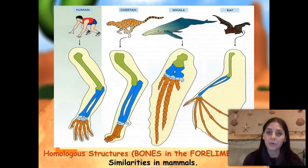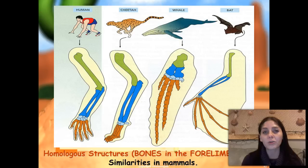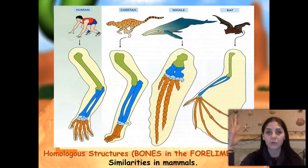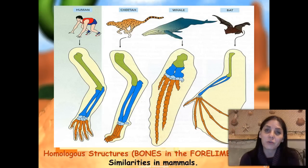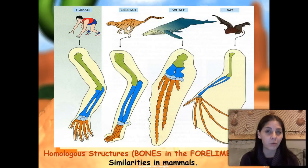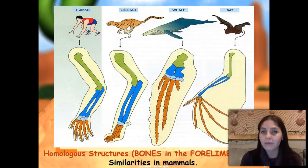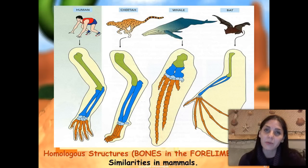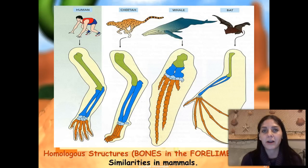Here is an example of homologous structures: the forelimb of a human versus the forelimb of a cheetah, a whale, and a bat. We all have the same bones, which means we all share some common ancestor, but we adapted to the different environments that we live in.